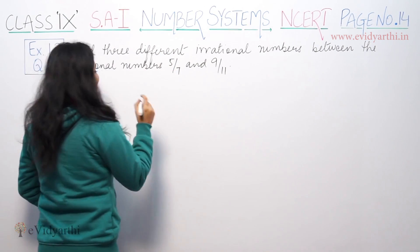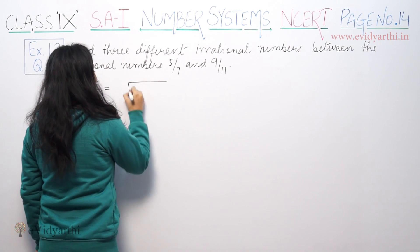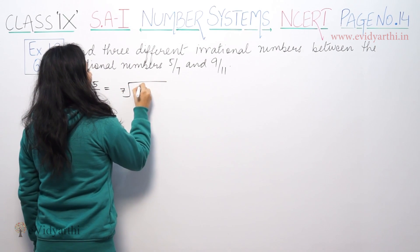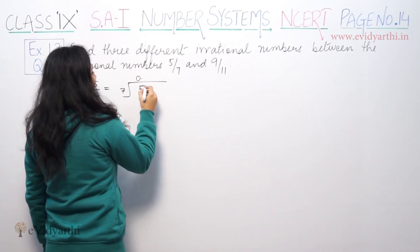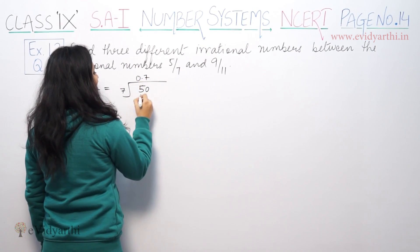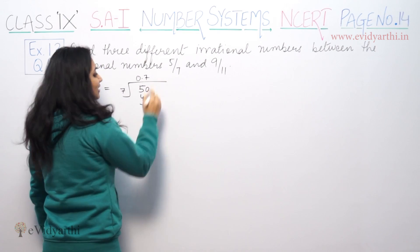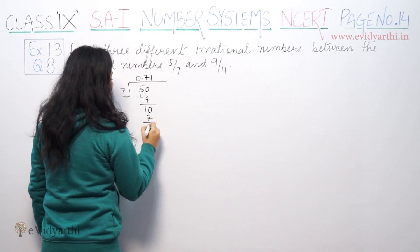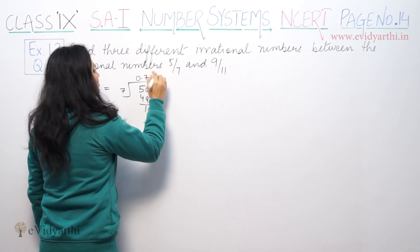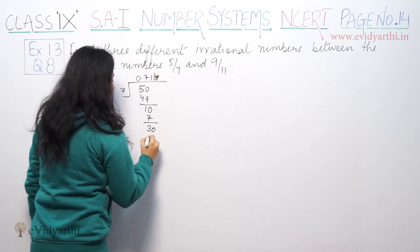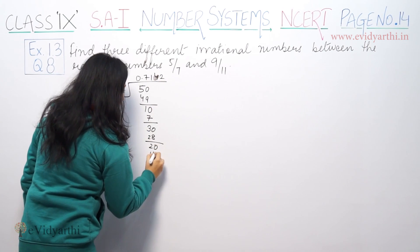Let's divide 5 by 7. We will perform the long division. 7 into 50 — 7 ones are 7, 7 fives are 35, 7 fours are 28, 7 twos are 14.